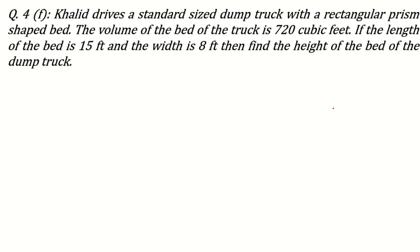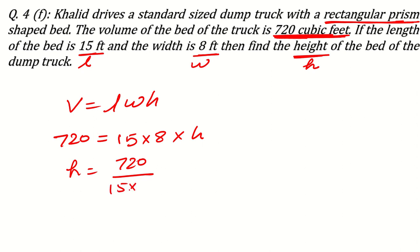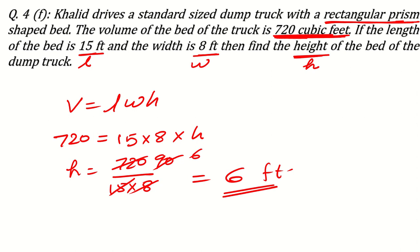Next: Khalid drives a standard-sized dump truck with a rectangular prism-shaped bed. The volume of the bed is 720 cubic feet. The length is 15 and the width is 8 — find the height. Volume equals L × W × H, so 720 equals 15 multiplied by 8 multiplied by H. H equals 720 divided by 15 divided by 8. 720 divided by 8 is 90, and 90 divided by 15 is 6. The height is 6 feet.